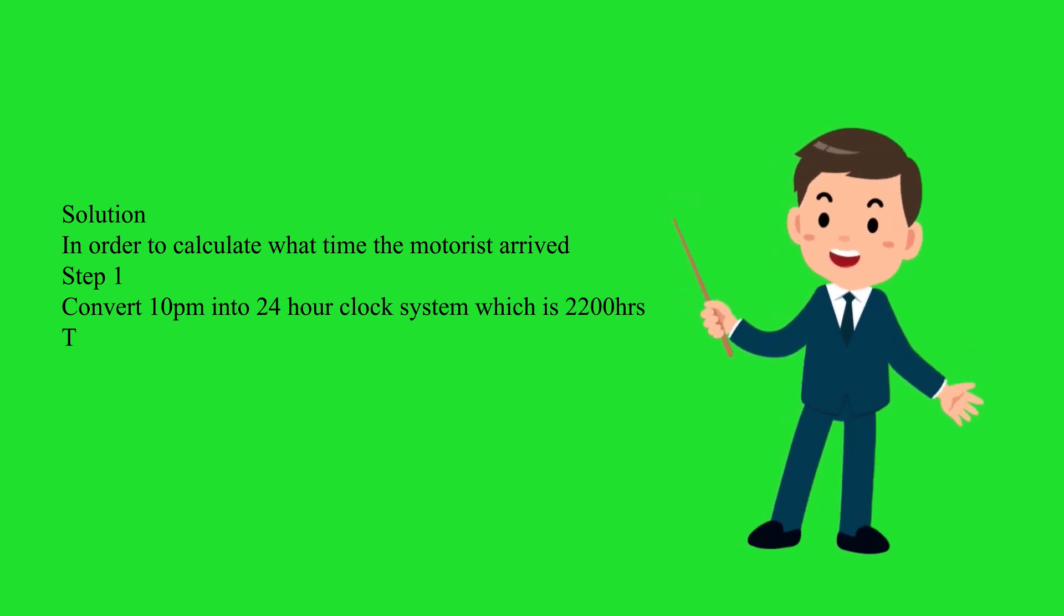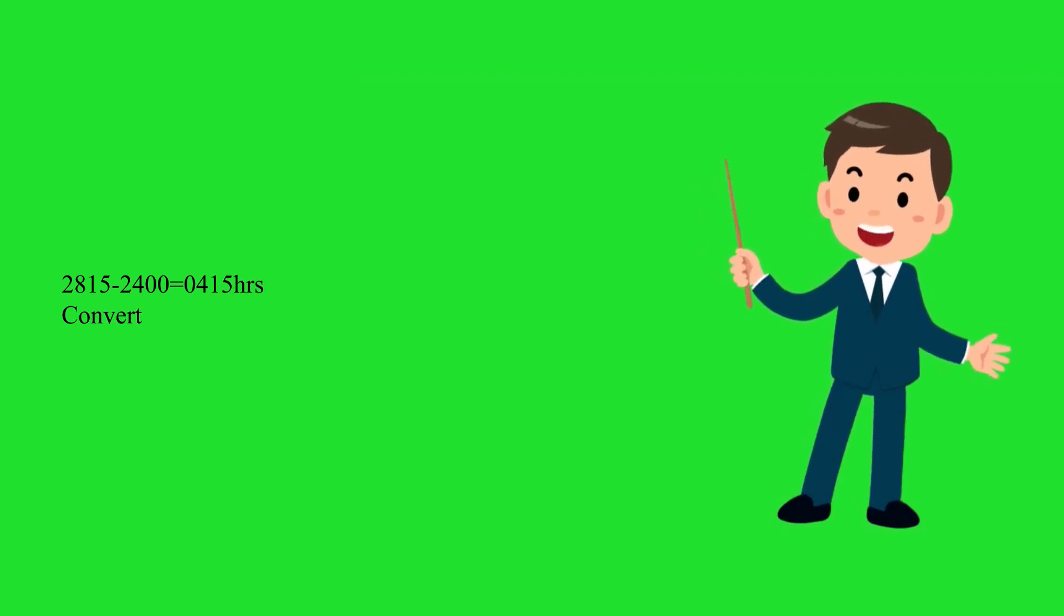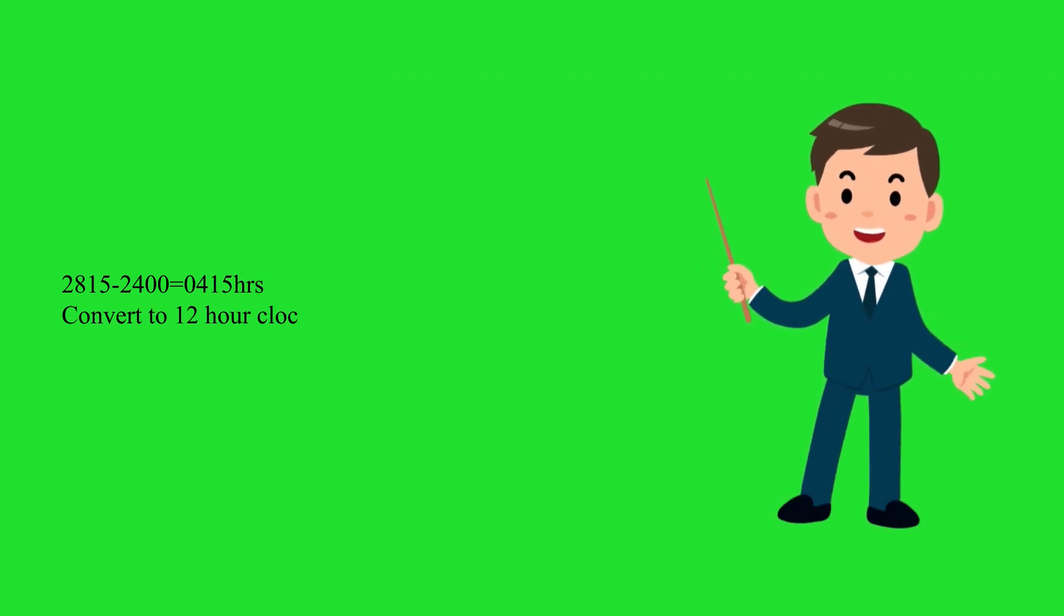Therefore, 2200 plus 0615 equals 2815 hours, subtract 2400 hours. 2815 hours minus 2400 hours equals 0415 hours.